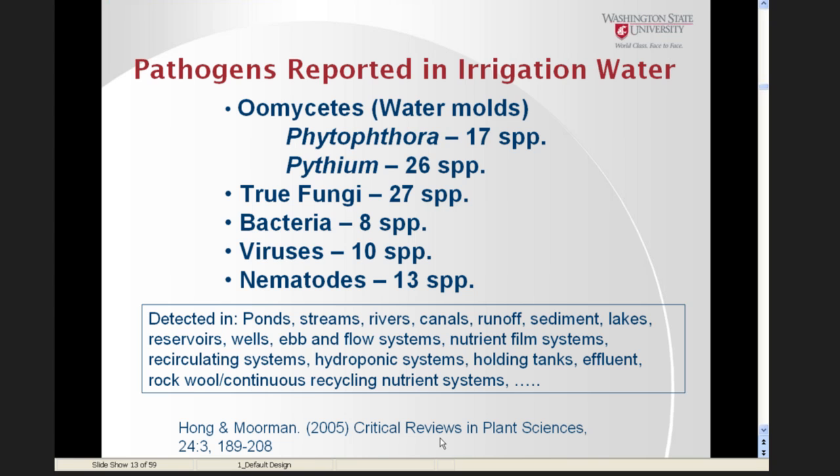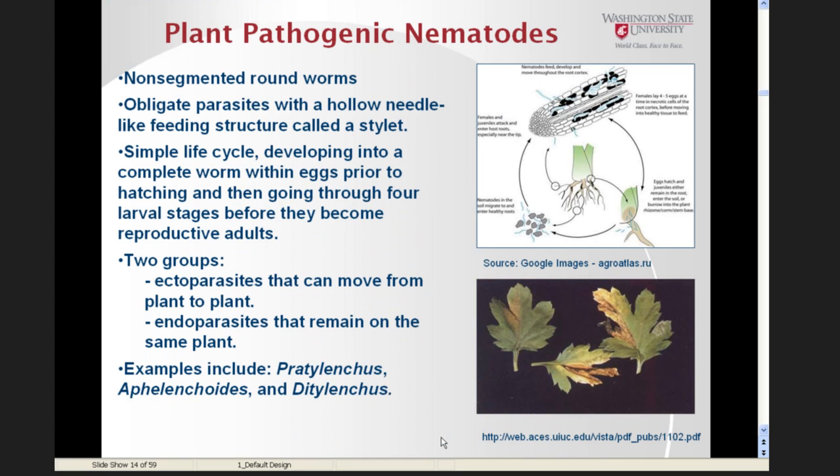Looking at pathogens reported in irrigation water, Hung and Moorman in 2005 did a review. Some reports are for detection of pathogens in ponds or streams, not necessarily always in irrigation water. They reported a number of pathogens, primarily the oomycetes — the Phytophthoras and Pythiums — but also 27 species of true fungi, 8 species of bacteria, 10 species of viruses, and 13 species of nematodes.